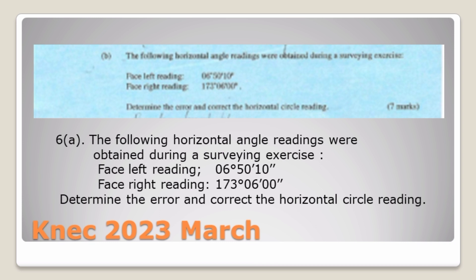So the question goes: the following horizontal angle readings were obtained during a surveying exercise. Face left reading: 6 degrees 50 minutes and 10 seconds. Face right reading: 173 degrees 6 minutes 0 seconds. Determine the error and correct the horizontal circle reading.